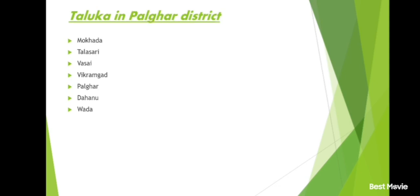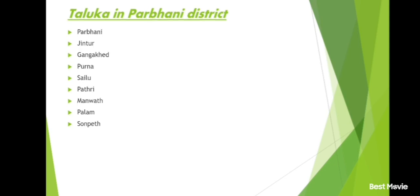Osmanabad district and its talukas: Osmanabad, Tuljapur, Umarga, Kalamb, Paranda, Bhum, Lohara, Washi.